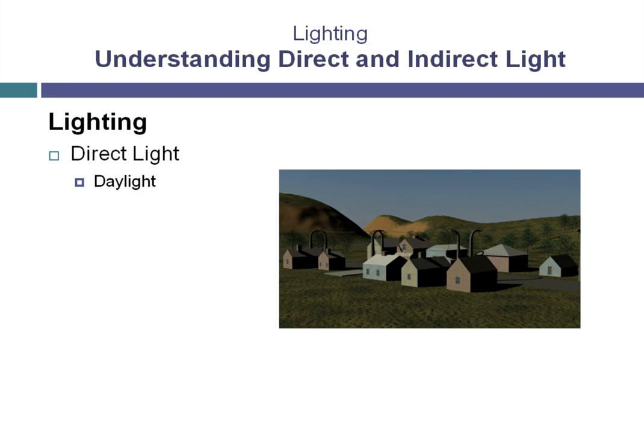The other type of direct light that we'll have a look at are photometric lights. Daylight can be a photometric light. Photometric lights are lights that work very well with the mental ray rendering engine. They're able to simulate highly realistic light properties.